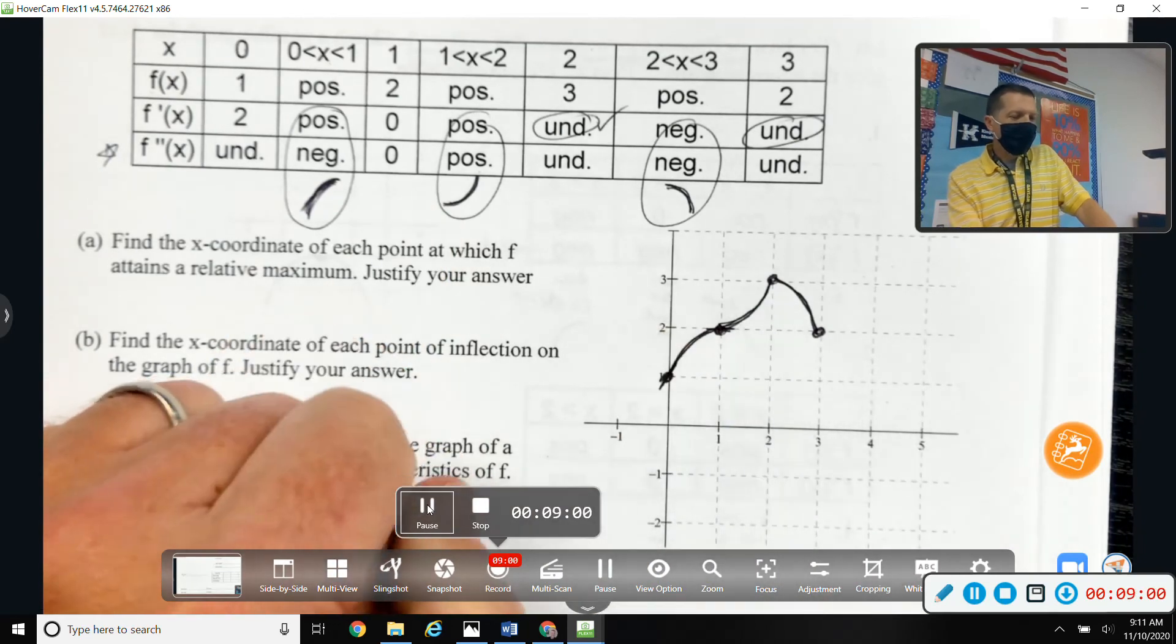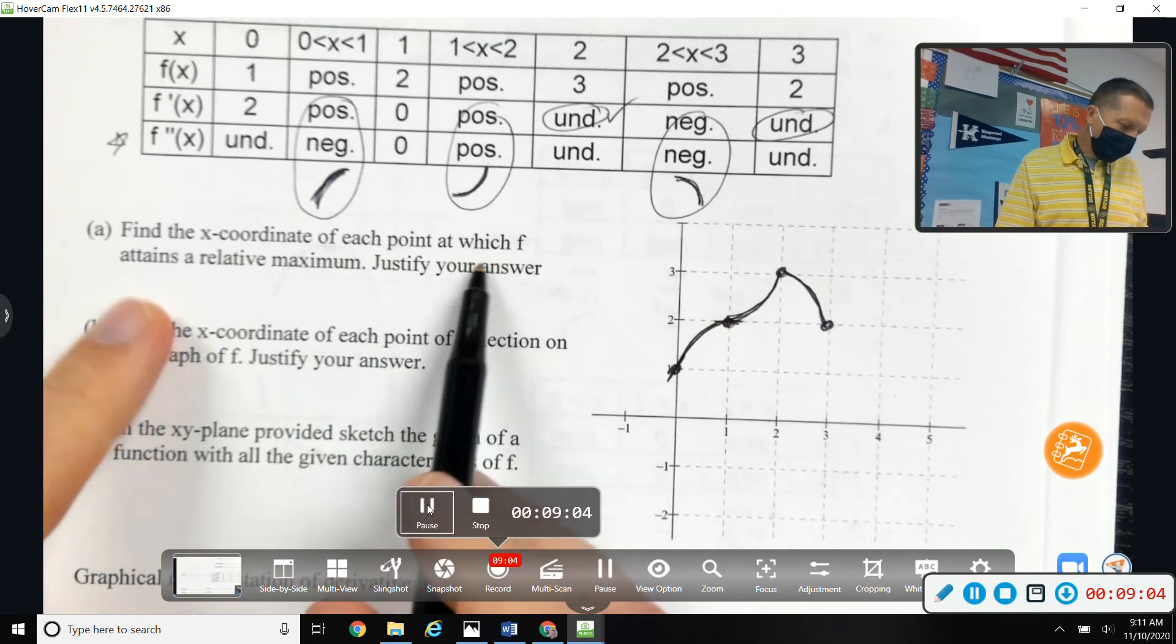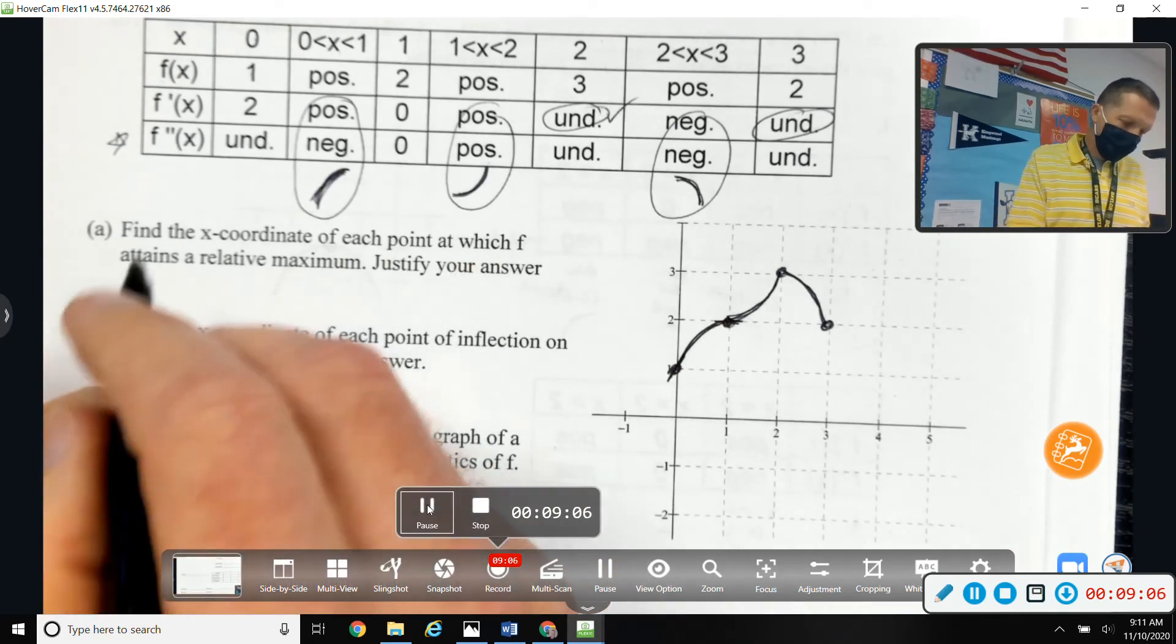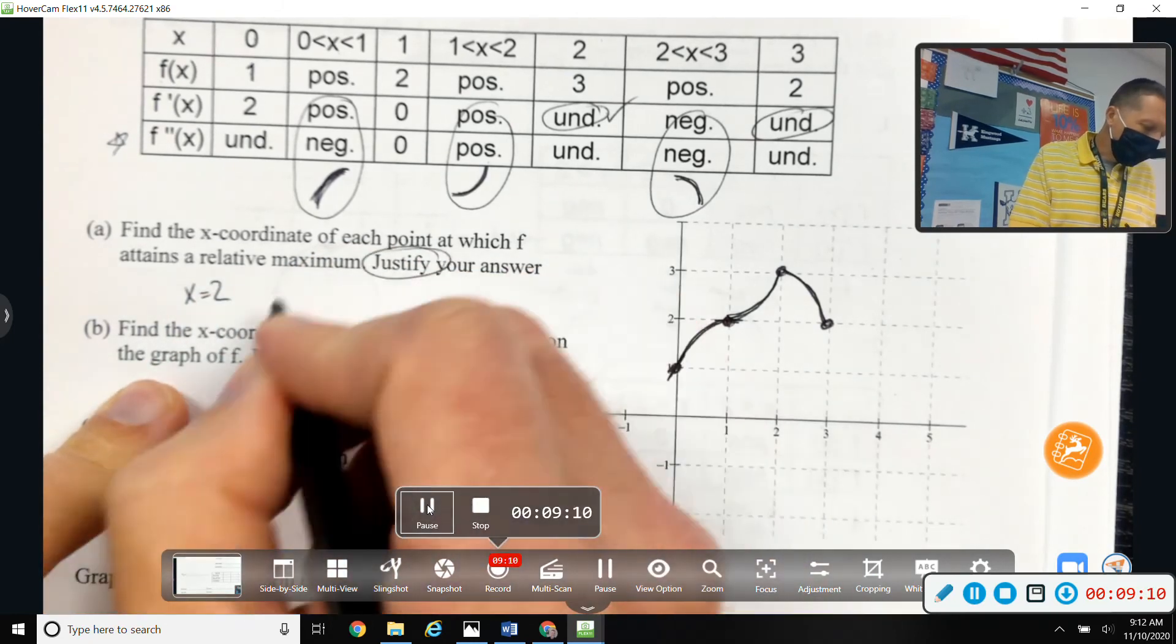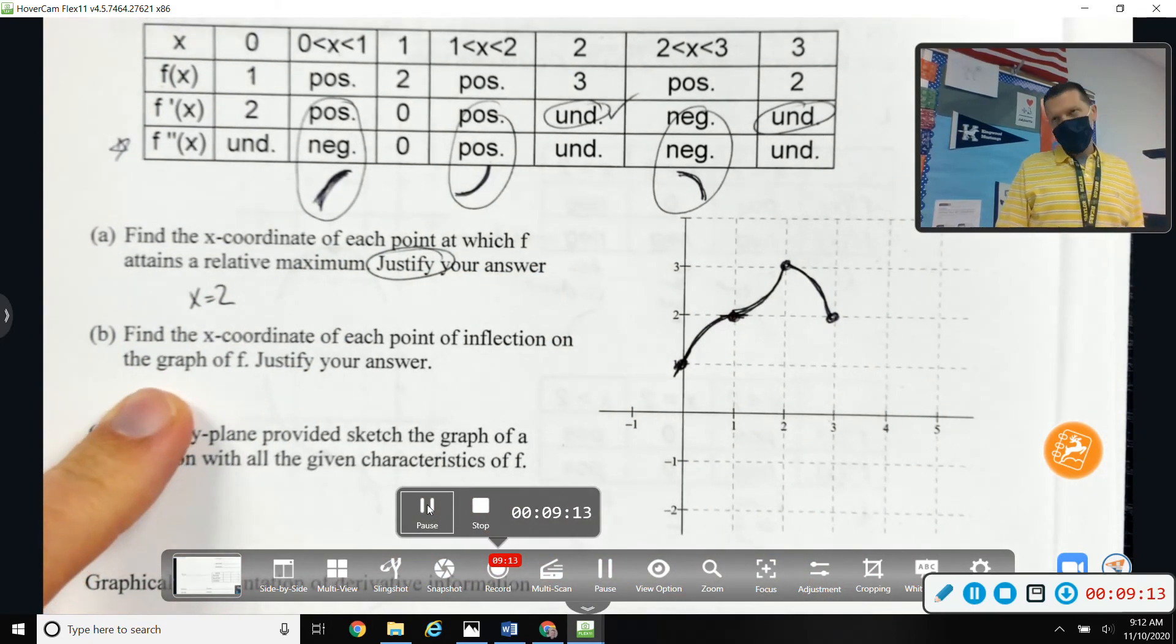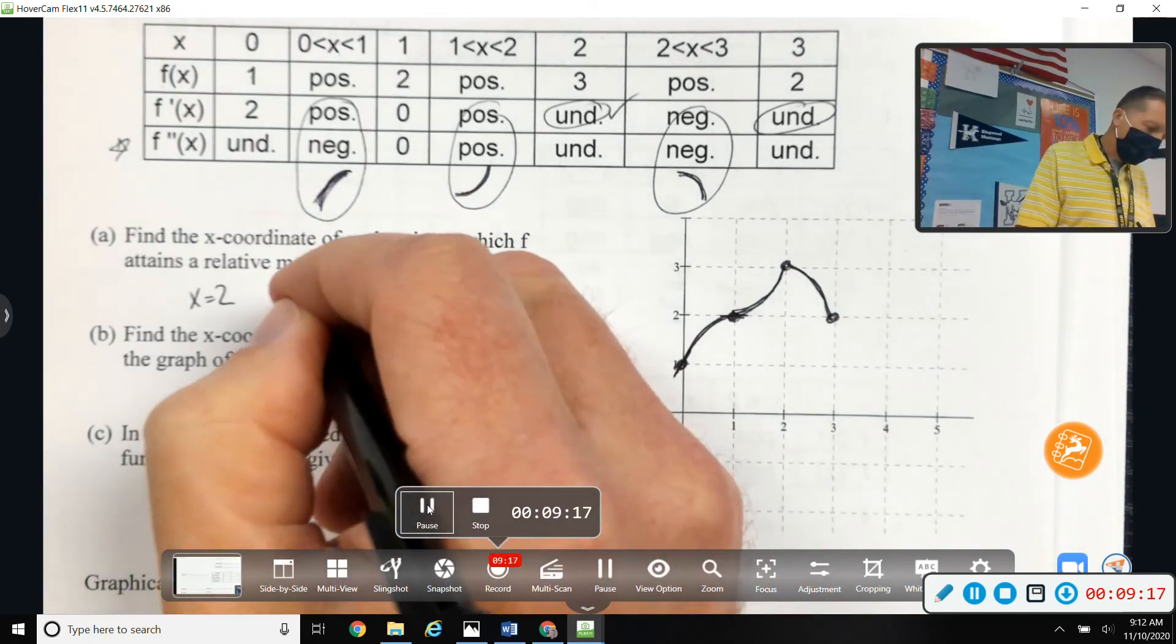Find the x-coordinate of each point at which f attains a relative maximum. Well, I mean, the picture makes that obvious - x equals 2. But justify your answer. Like we should almost be justifying maxes and mins in our sleep at this point. F prime changes positive to negative.